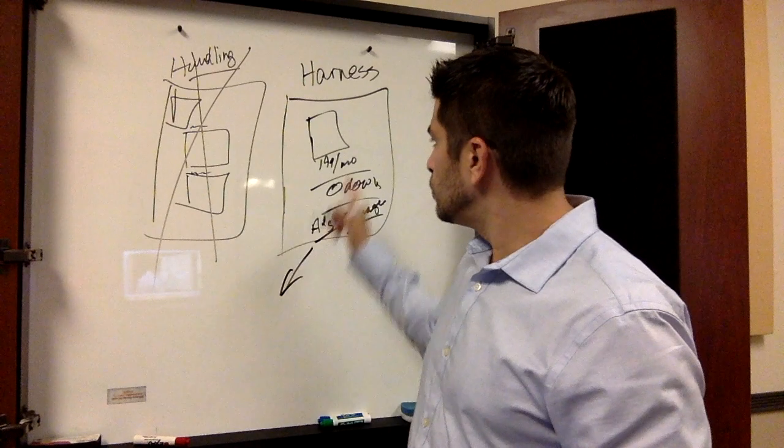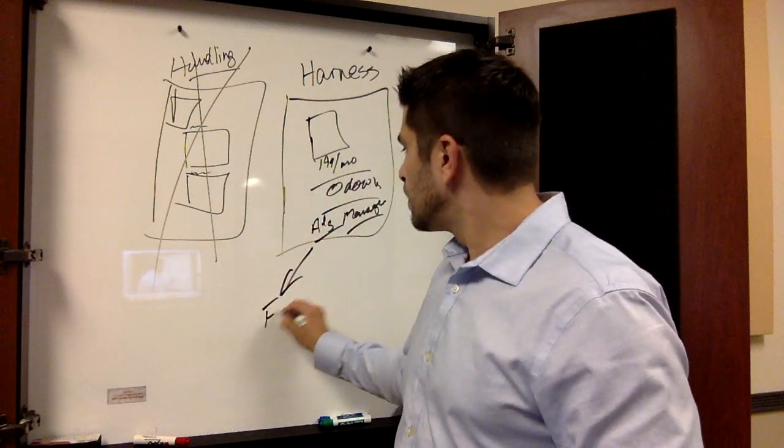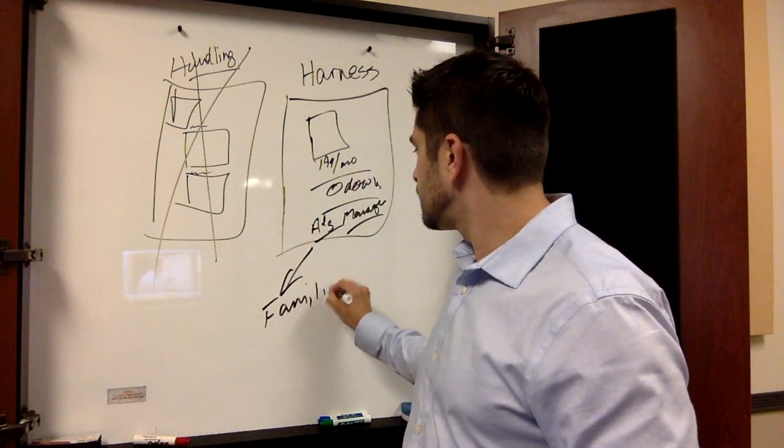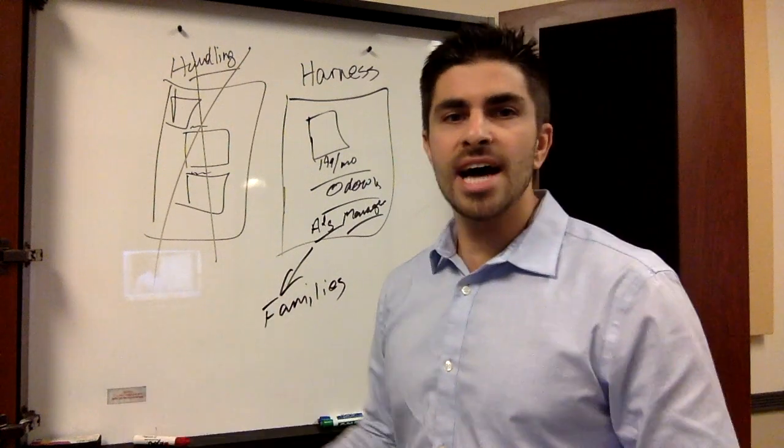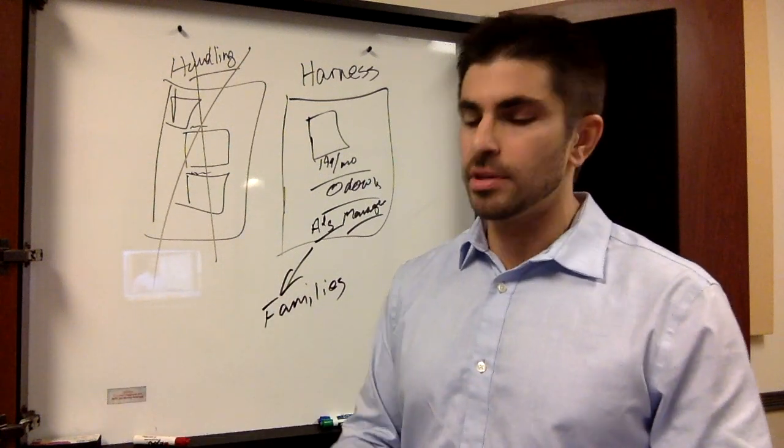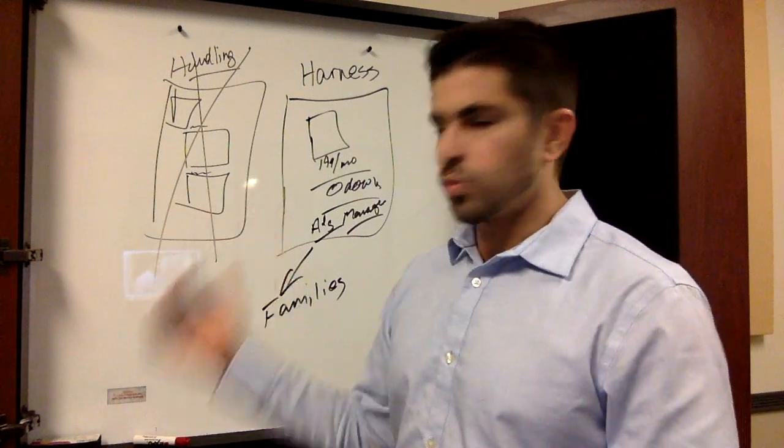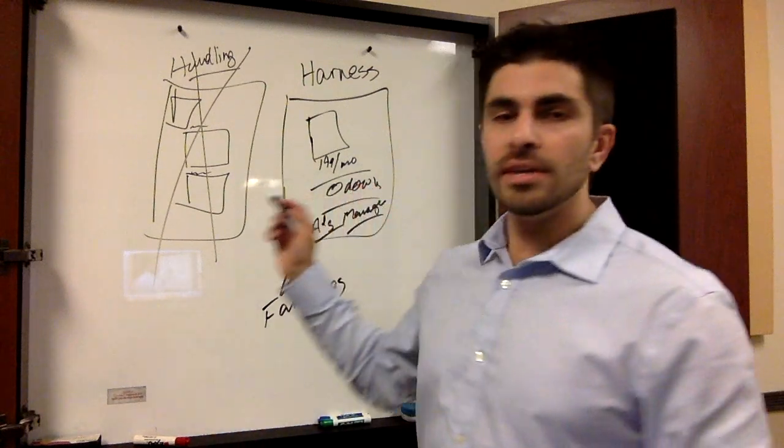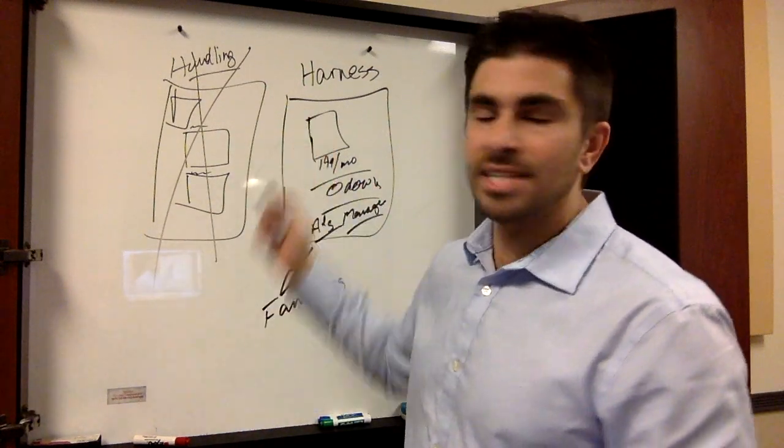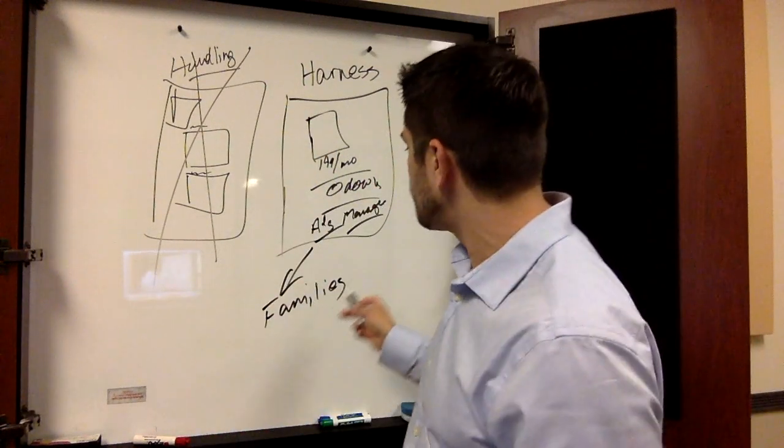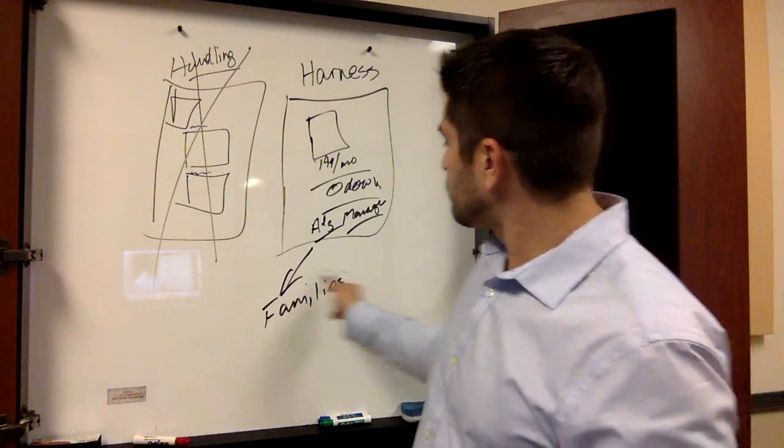So for instance, people who are in a Murano. So families, moms and dads with children between the ages of zero and 12 years old. If you go any more than that, they might need to step up to like an Armada or something like that. But we're going to go after families.